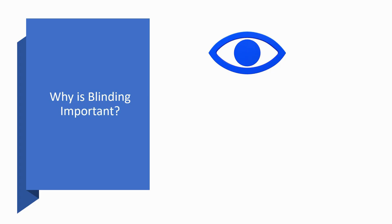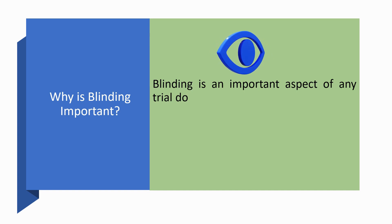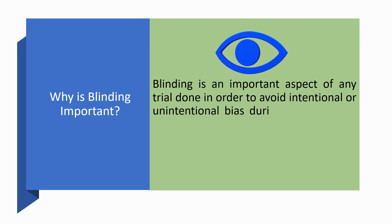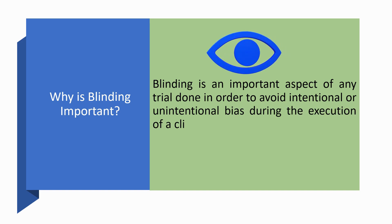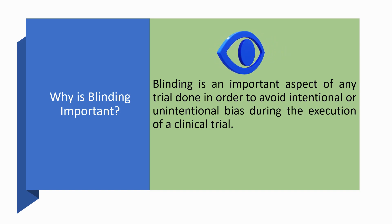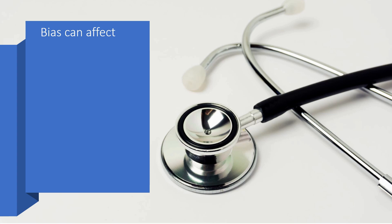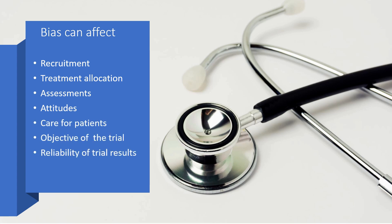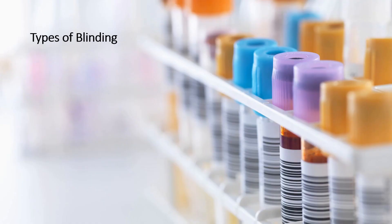Blinding is an important aspect of any trial, done in order to avoid intentional or unintentional bias during the execution of a clinical trial. This is important because bias can affect recruitment, treatment allocation, assessments of the patients, attitudes towards the patients, care for patients, the objective of the trial, and reliability of trial results.